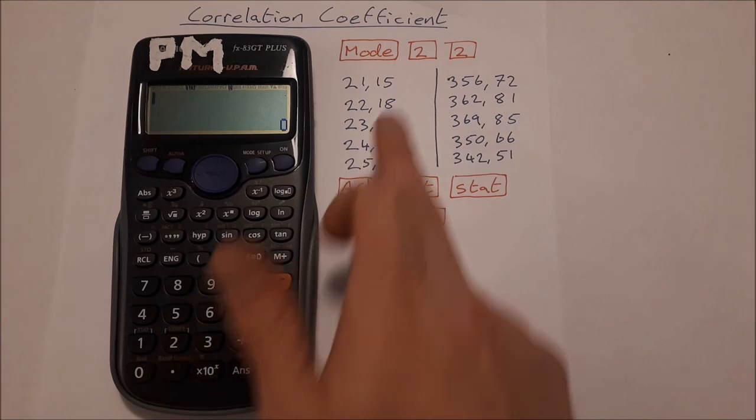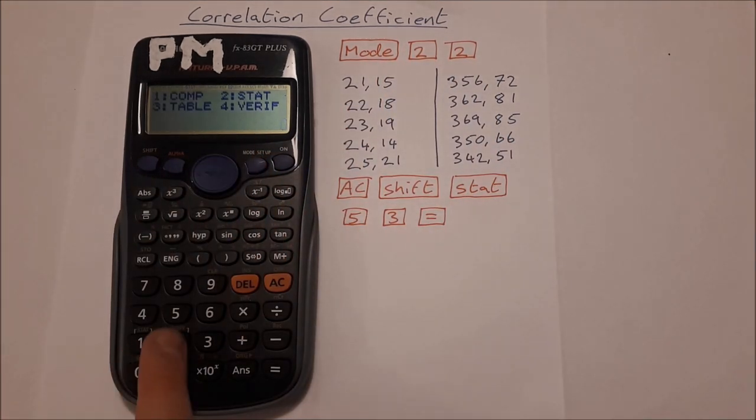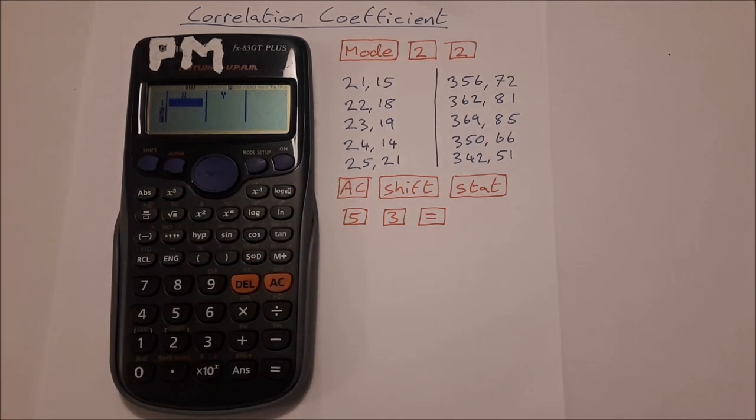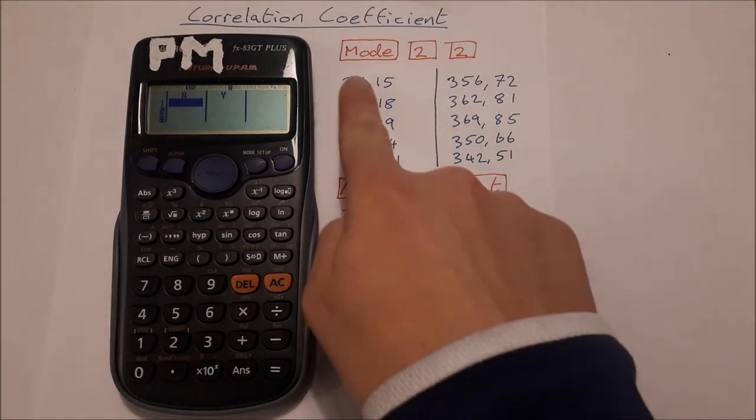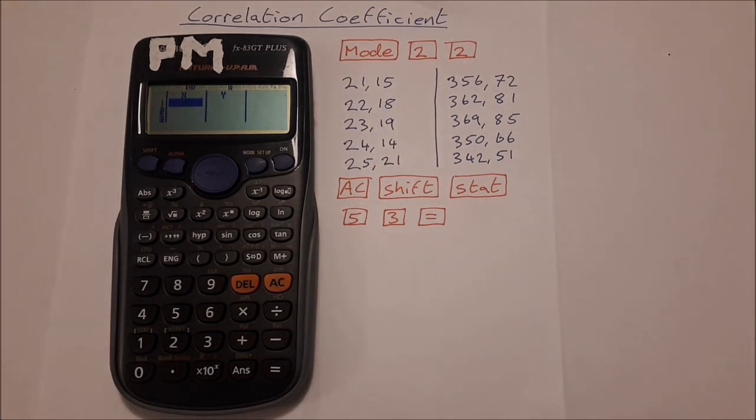In order to input my data, I press Mode 2 2. Mode 2 will be stats and 2 is for this A plus BX, that gives us our X Y table. These are our x coordinates, these are our y coordinates.